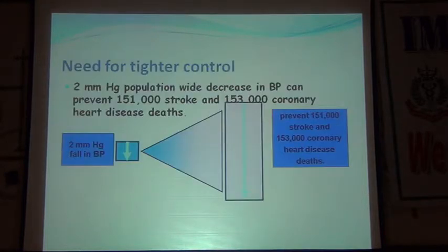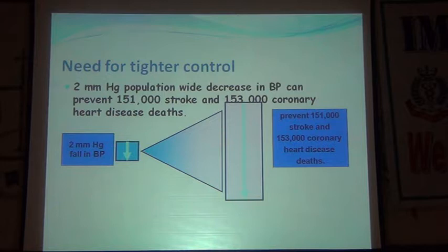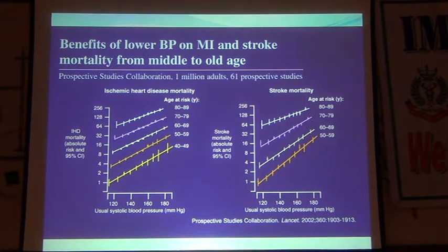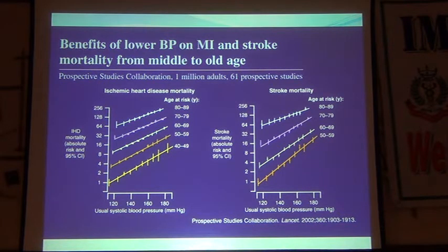This population study slide shows that a reduction of just 2 mmHg in BP can prevent 151,000 stroke deaths and 157,000 coronary disease deaths. Another slide shows that by reducing BP we can reduce mortality from ischemic heart disease and stroke across age groups starting from 40-49. As BP comes down, deaths come down across all age groups.